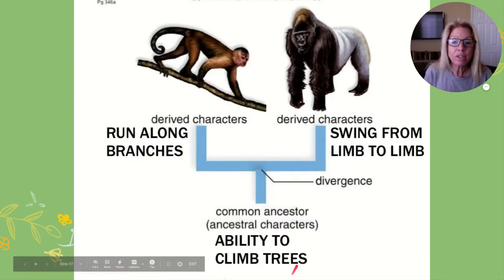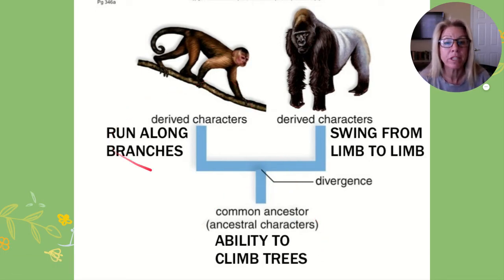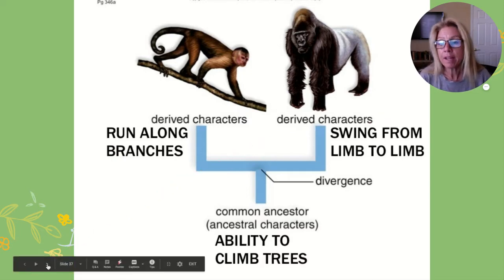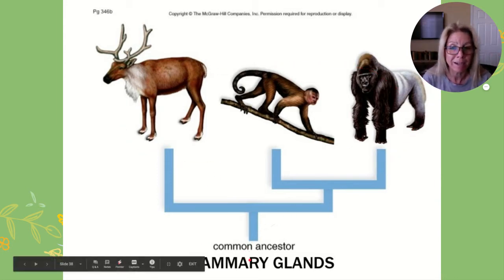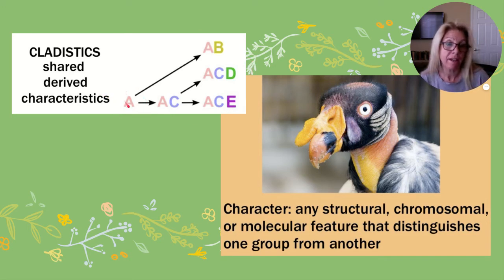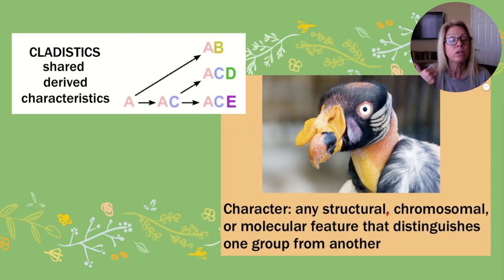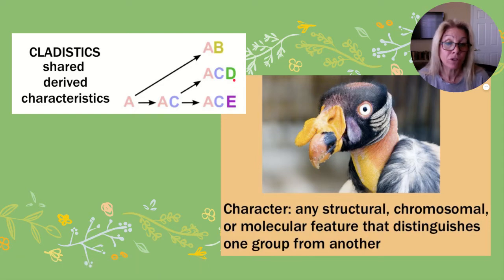Here's an example: climbing trees would be an ancestral trait shared by both primates, but running along branches versus swinging from limb to limb are their derived traits. Backing up further to compare with a caribou, all three share mammary glands — backing up in time. In cladistics, all share trait A as their ancestral trait, then there's a speciation event: only one has trait B. A character trait is any structural — morphological, chromosomal, or molecular — feature that distinguishes one group from another.